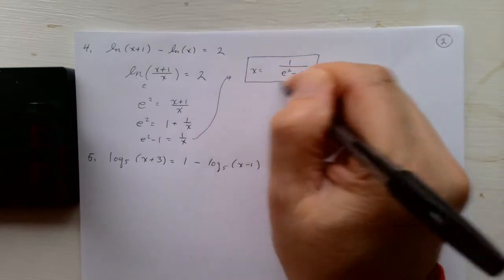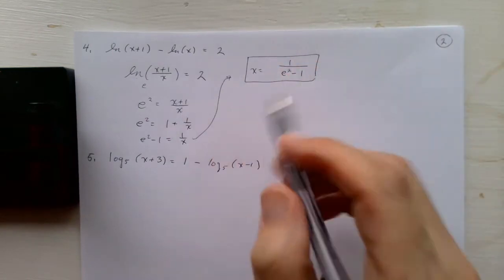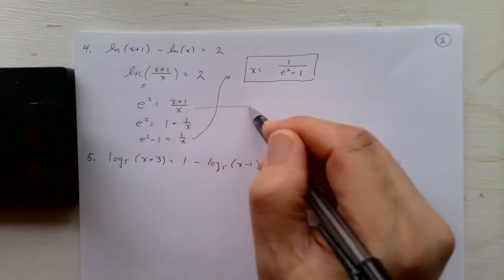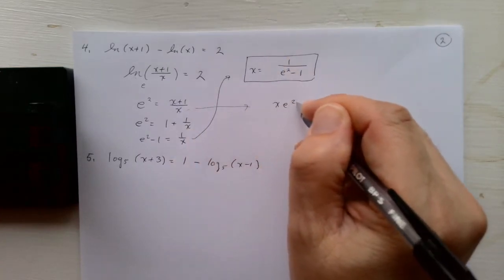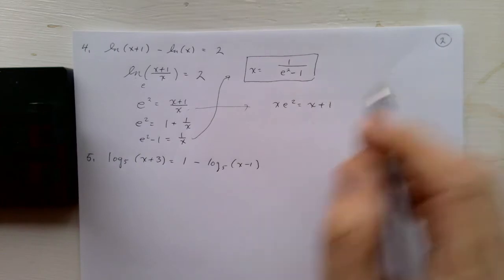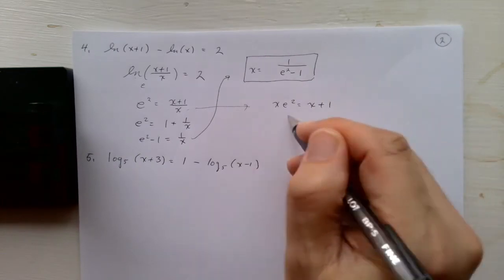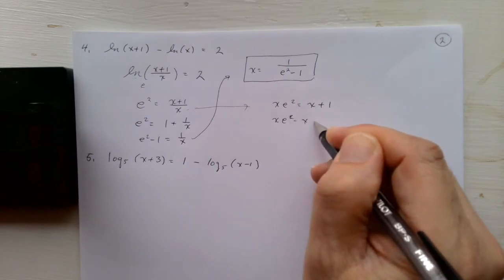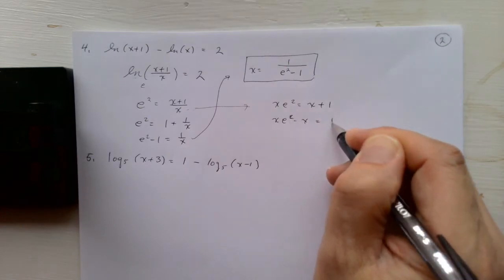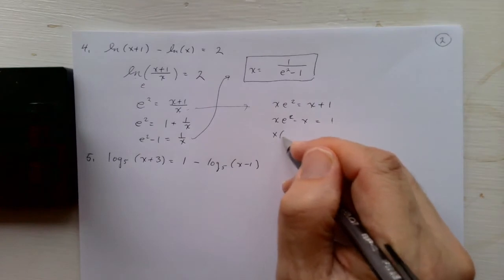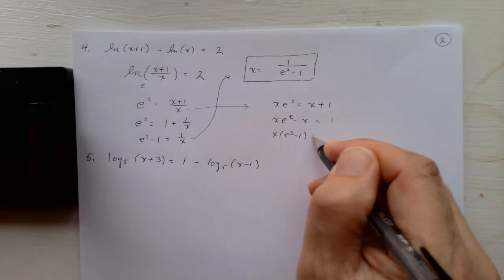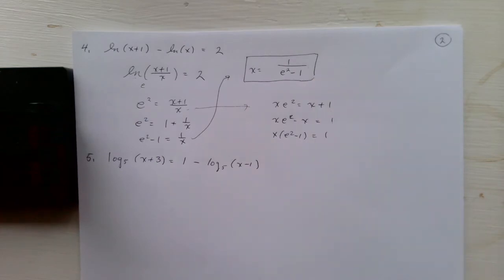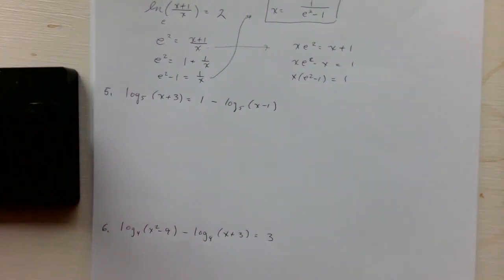The other way you could have done this is you could have multiplied both sides by x. Put all the x terms together, subtract x from both sides, factor out an x, and then divide by e squared minus 1, so you get the same thing. Either way works.